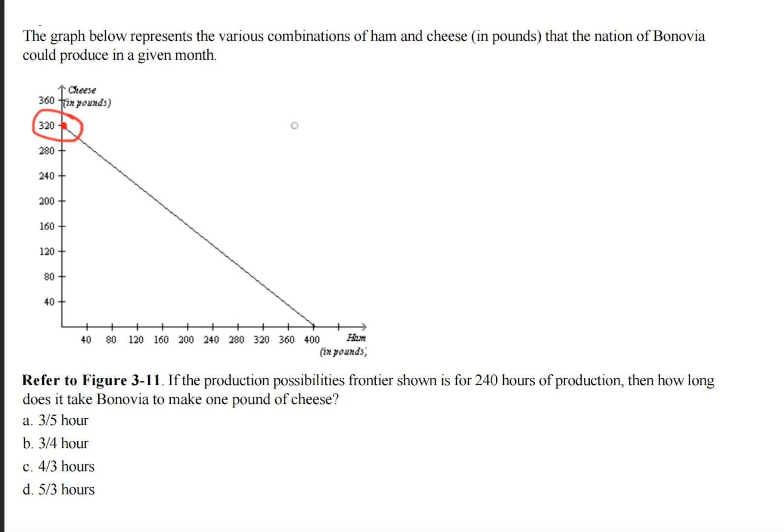Next, let's set up a ratio. In 240 hours, this country can make 320 pounds of cheese.